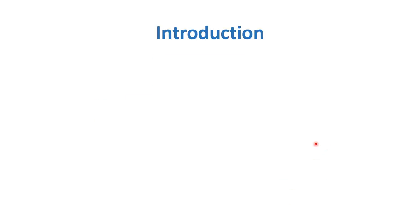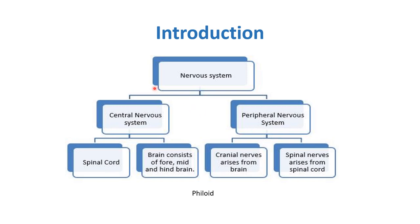In order to understand the further divisions of the human nervous system, we are going to see this flow chart. The flow chart shows the nervous system divided into the central nervous system and the peripheral nervous system. The CNS includes the spinal cord and brain — forebrain, midbrain, and hindbrain. The peripheral nervous system includes cranial nerves arising from the brain and spinal nerves arising from the spinal cord.